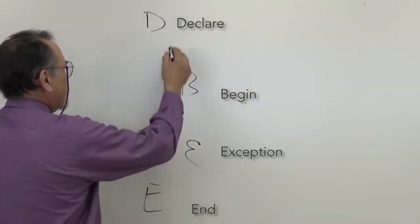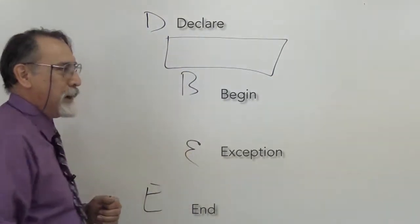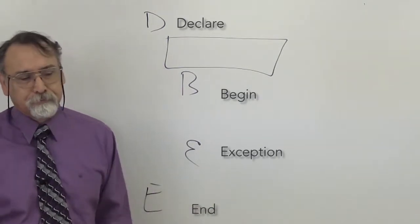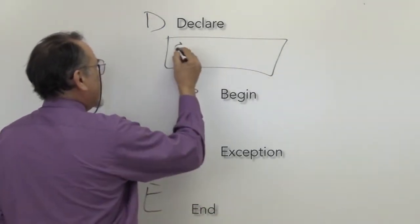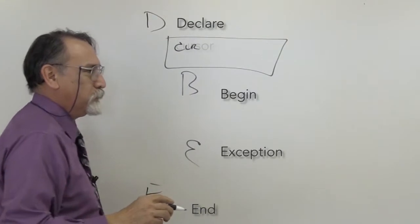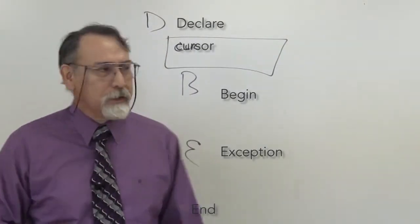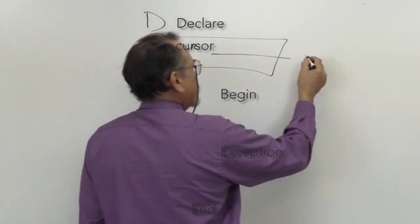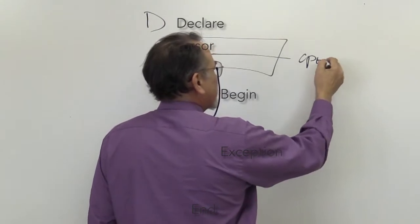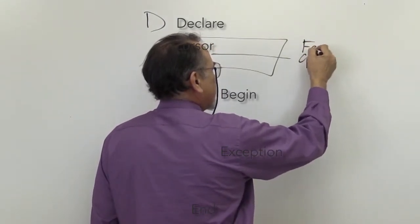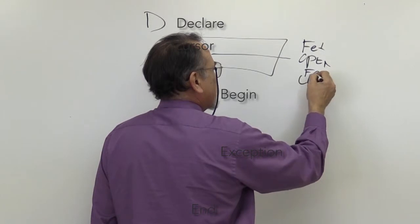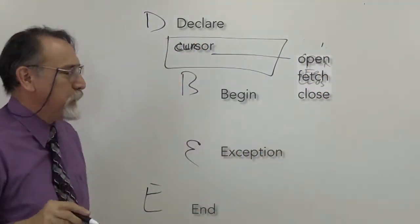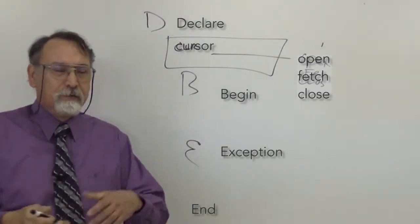In the declare section, this is where you start itemizing the items you will need to do your work. The cursor will reside here. When you get into the begin area, this is where you do the open, the fetch, and the close. So you have the open, fetch, and close scenarios that you have to use.